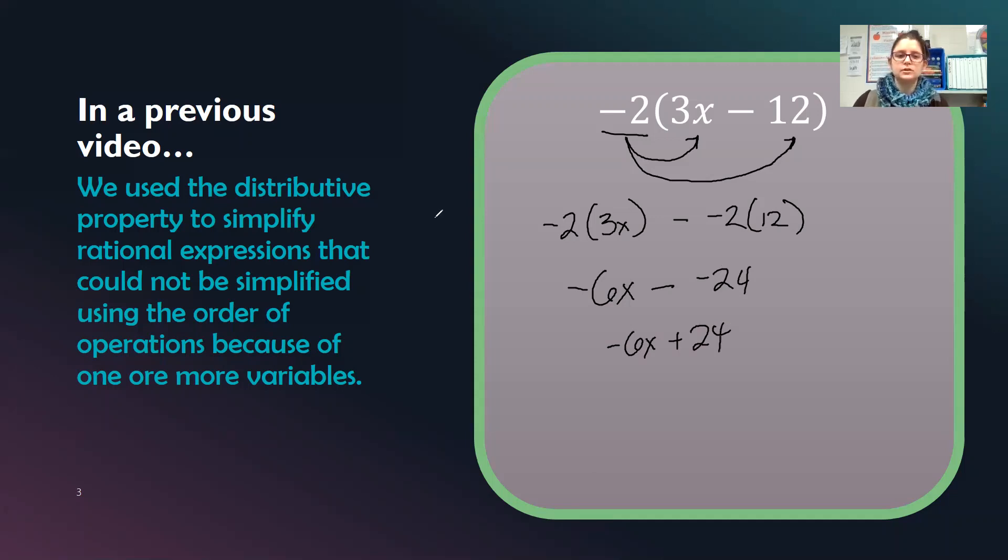So that is how we use the distributive property. So today we're going to look at undoing the distributive property or working backwards to a factored state of being.